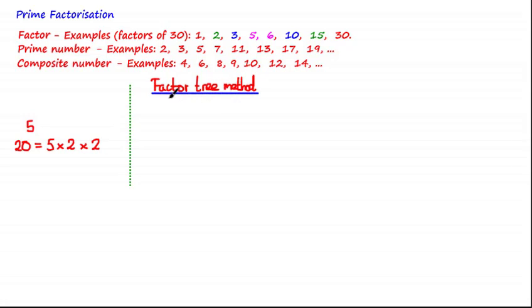So assuming we were asked to use this method to express 20 as a product of prime factors. We would start with the number we're given, 20. We would then draw two branches. It's always two branches.